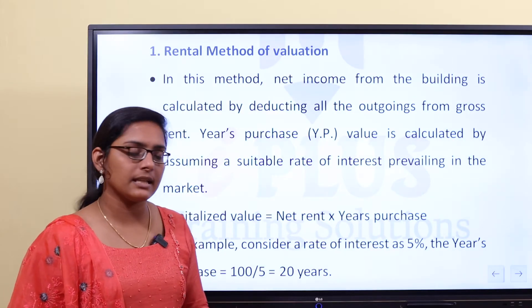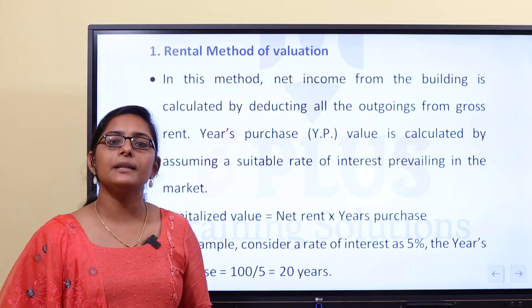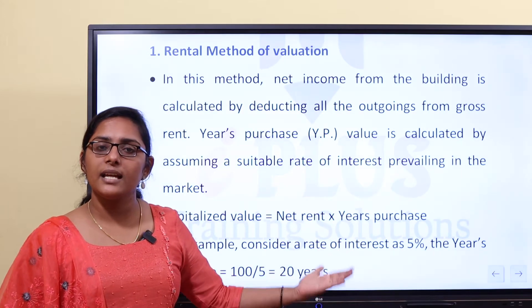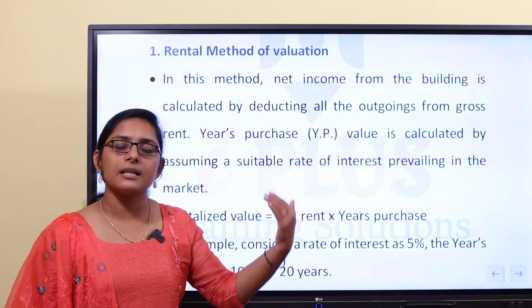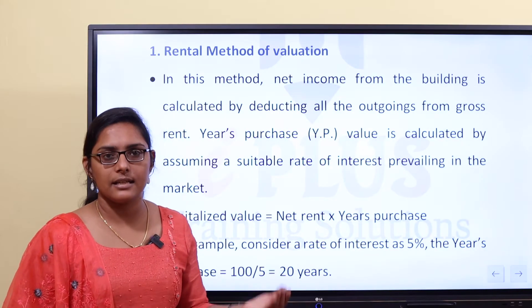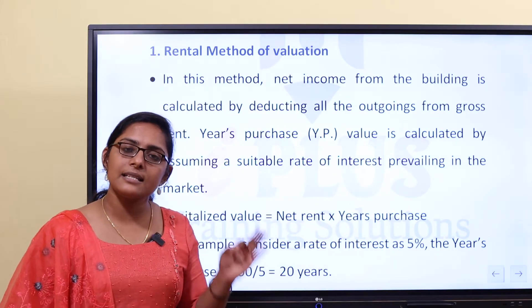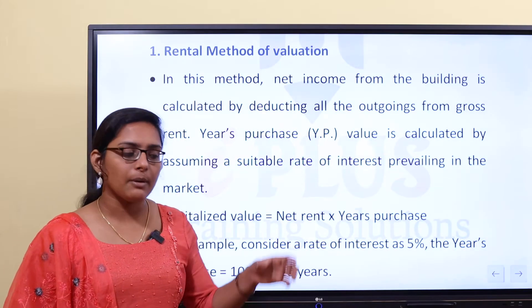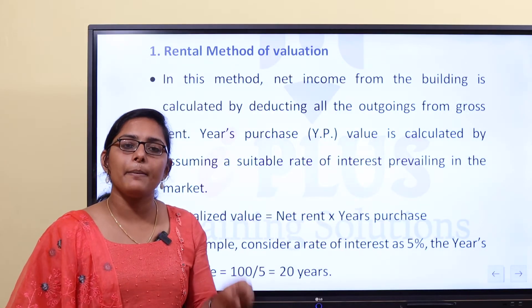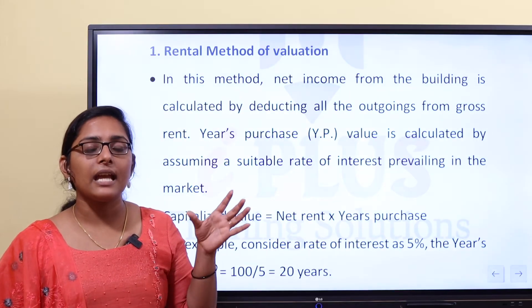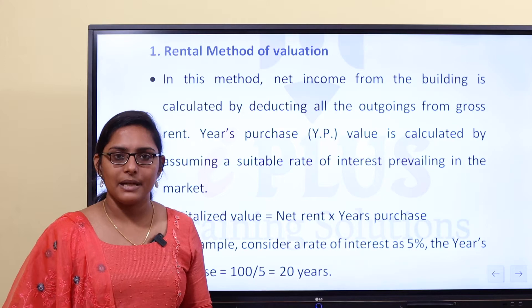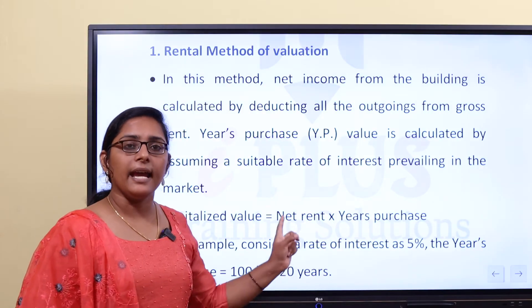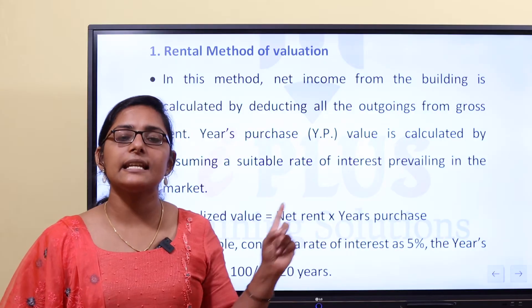The Year's Purchase is calculated as net rent, or as a capitalized value of property using the formula. The Year's Purchase equals 100 divided by the rate of interest prevailing in the market. If we multiply the net rent by the Year's Purchase, we get the capitalized value of that property. That is what we call the rental method of valuation: Capitalized Value equals Net Rent multiplied by Year's Purchase.